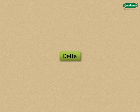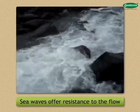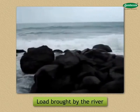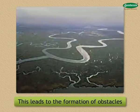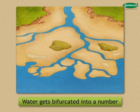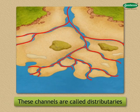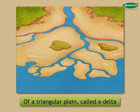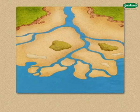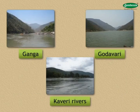Delta: When the river flows into the sea, the sea waves offer resistance to the flow of river water. As a result, the load brought by the river gets deposited at its mouth. This leads to the formation of obstacles in the flow and the water gets bifurcated into a number of channels called distributaries. The deposition leads to the formation of a triangular plane called a delta. Extensive deltas are formed along the mouths of Ganga, Godavari and Kaveri rivers.